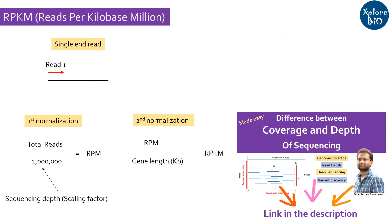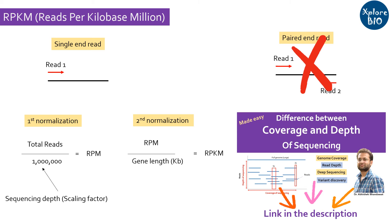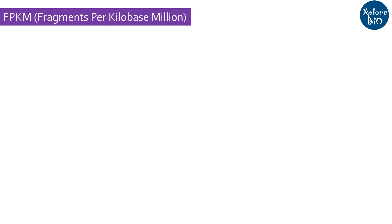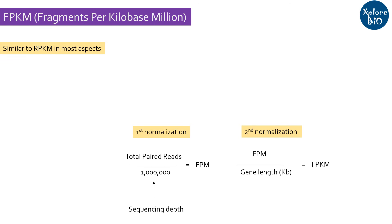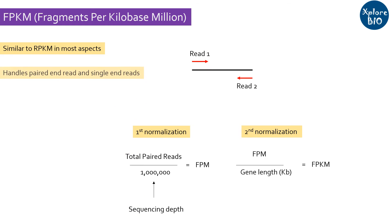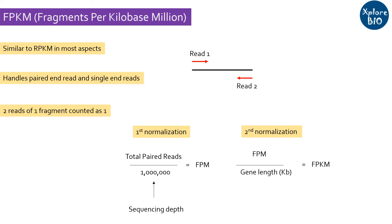The major limitation of RPKM is that it cannot handle paired-ended data efficiently. To overcome this, we use FPKM, or fragments per kilobase million. FPKM is very similar to RPKM in most respects, but the major difference is that FPKM can handle paired-ended data as well. In paired-ended data, two reads correspond to one fragment, and unlike RPKM, FPKM does not count such paired-ended reads twice. Thus, FPKM is suitable for both single-ended as well as paired-ended reads.